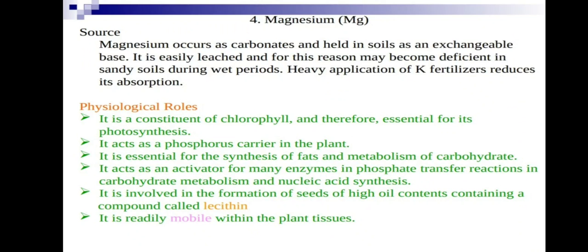Magnesium acts as a phosphorus carrier in the plant. It is essential for synthesis of plant fats and metabolism of carbohydrates. It acts as an activator for many enzymes in phosphate-transferring reactions in carbohydrate metabolism and nucleic acid synthesis. Importantly, it is involved in the formation of seeds of high oil content, containing a compound called lecithin — relevant for oil seeds like sunflower and groundnut.